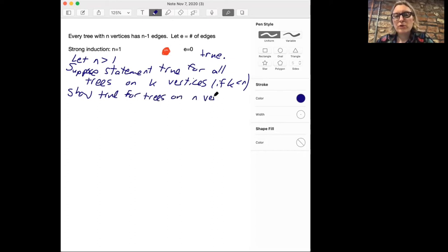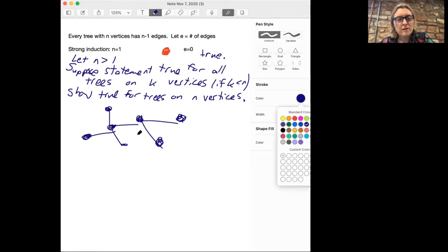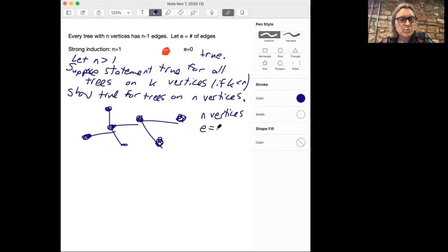Actually, I think I've done this proof before when we were talking about induction, but it's always good to do it again. What we're going to do is think about our tree. It could be quite a complicated tree with many vertices. This has n vertices. Let's say e is the number of edges. We want to show that e equals n minus one.